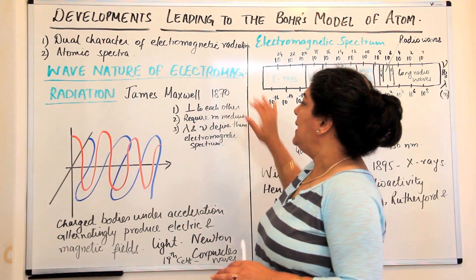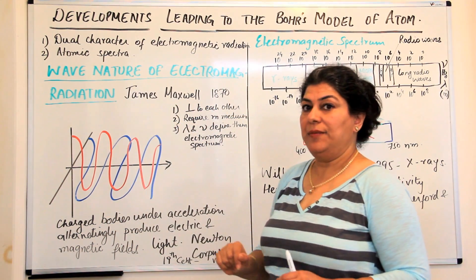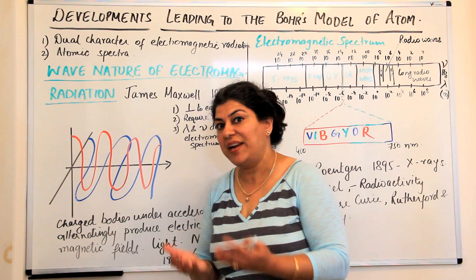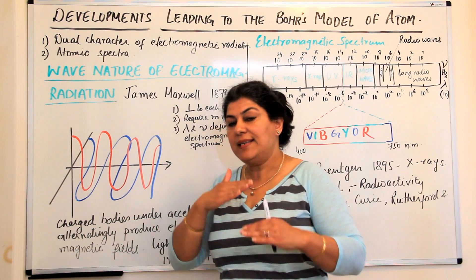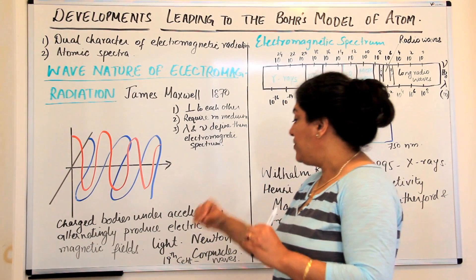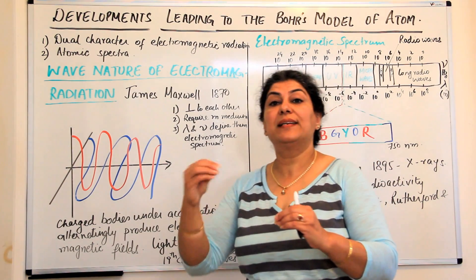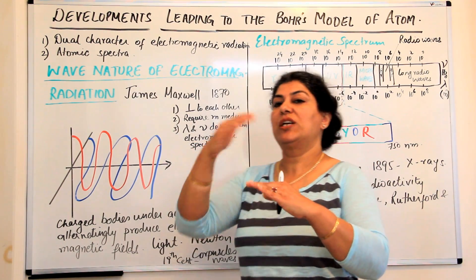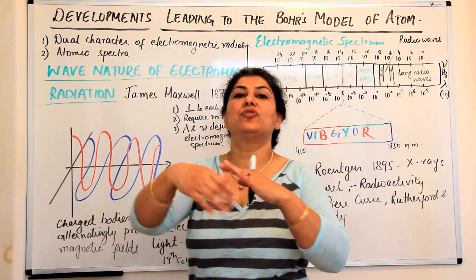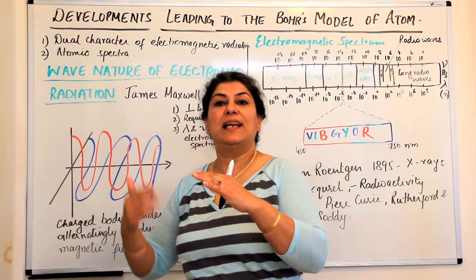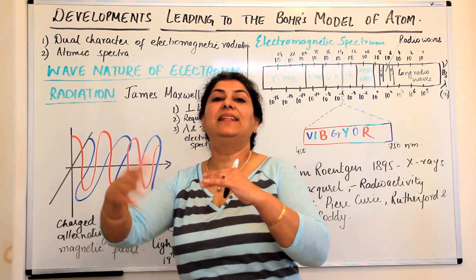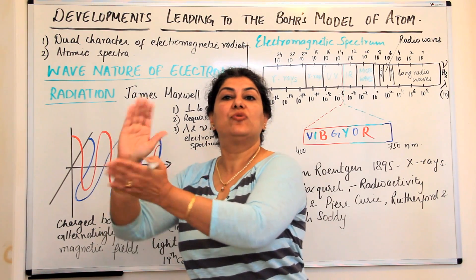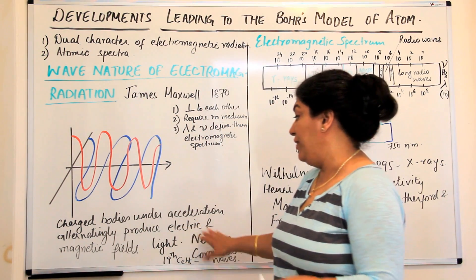James Maxwell, in 1870, found that when a charged particle is under acceleration, it produces electric and magnetic fields alternatingly — an electric field, then a magnetic field, then an electric field, then a magnetic field. It alternatingly produces electric and magnetic fields.